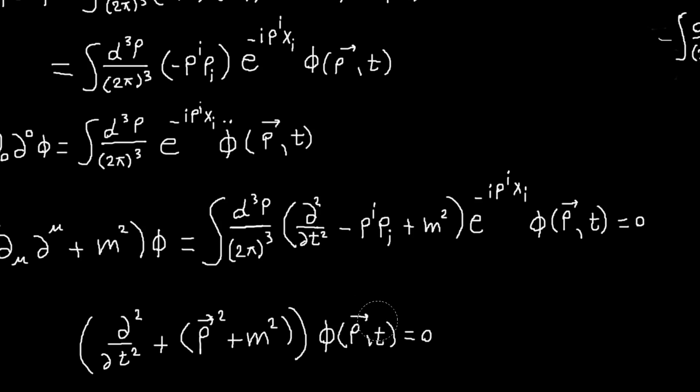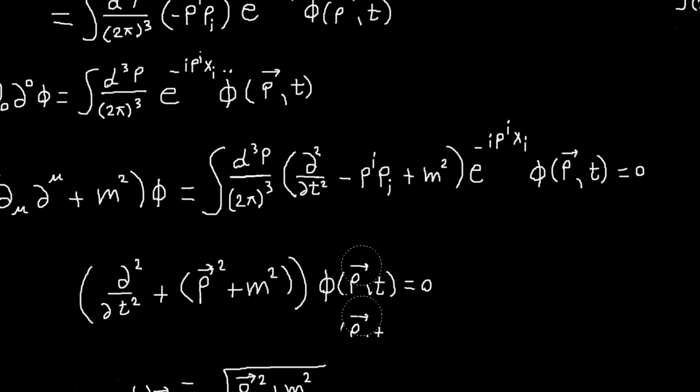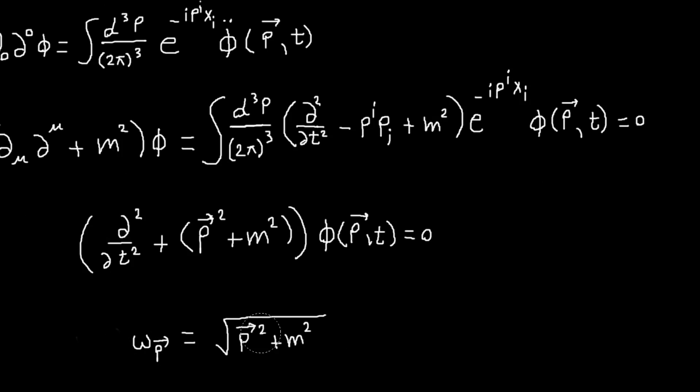Here in this equation, p is fixed. For every value of p, to make this total expression zero, we just need phi of p and t to satisfy this equation. But this equation is just the equation of a harmonic oscillator with frequency omega p, the square root of p squared plus m squared.